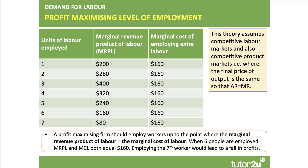The sixth worker — they'll employ them; they both equal $160. But the seventh worker: you get $80 revenue but it costs $160 to employ, therefore you lose profits from employing the seventh worker. We'll come back to that when we come to the analysis diagrams.